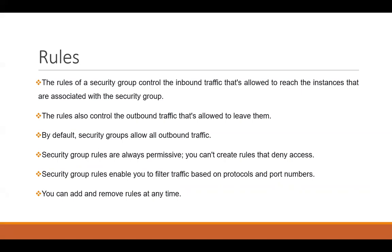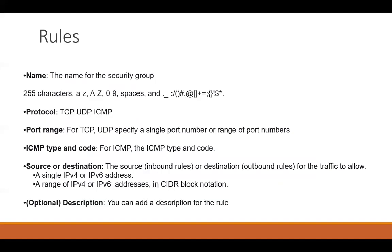We can also add or remove rules anytime from the security group. While naming a security group, there are a few rules to follow: the name can have a maximum of 255 characters, and we can use a to z, A to Z, or 0 to 9, plus spaces and special characters. The protocols we use are TCP, UDP, and ICMP. For port ranges, we can define a single port like 1433 or 3389, or a particular range like 3000 to 4000.